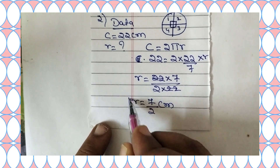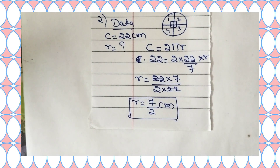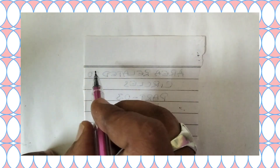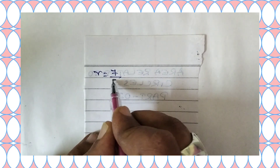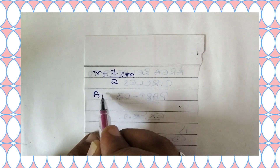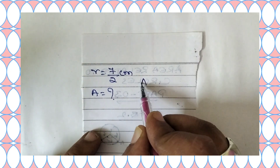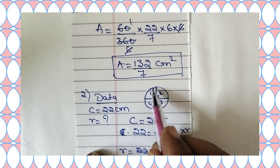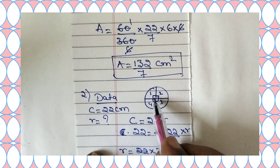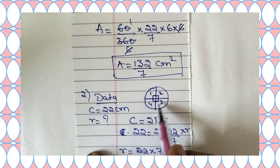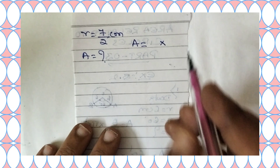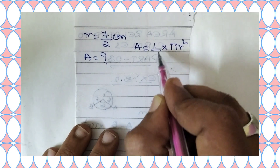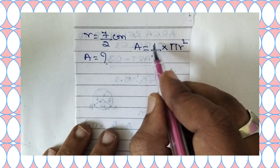So the radius of the circle is equal to 7 by 2 cm. Now let us make a list of data. We need to find the area of a quadrant. The area of a circle is pi r square, and since a circle is divided into 4 equal parts, 1 by 4th of the area of a circle becomes the area of the quadrant.